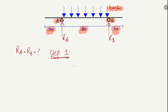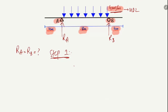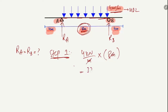To analyze this beam, we use a two-step method. Step one: we know there is a 4 kilonewton per meter uniformly distributed load acting on the beam. We multiply this load with the distributed length on which it is distributed. The load is only distributed on the length of 8 meters, so: 4 kilonewton/meter × 8 meters. The meters cancel and we get 32 kilonewtons.